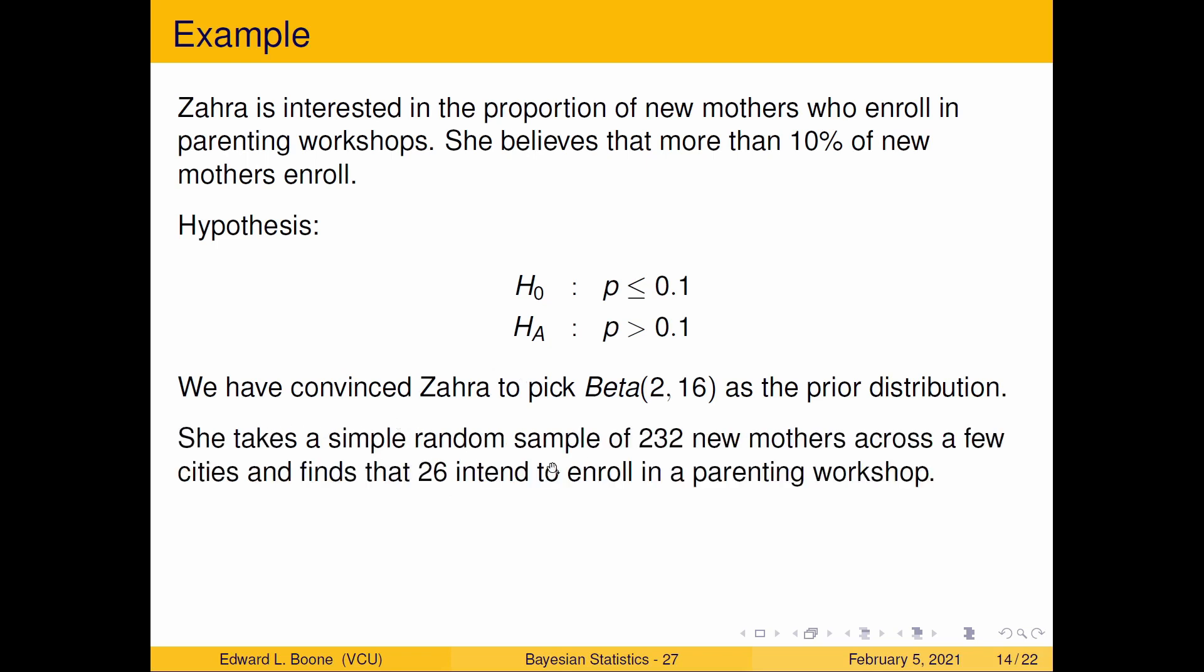She takes a sample of 232 new mothers across a few cities and finds that 26 intend to enroll in a parenting workshop. Here's our formula for the posterior distribution. We've got to plug in our alpha and our beta and our n which is 232 and 26 which is our sum of the xi. That comes out to a Beta(28, 222).